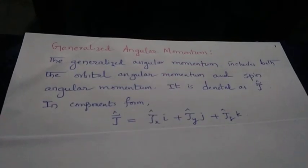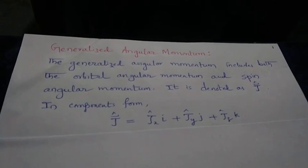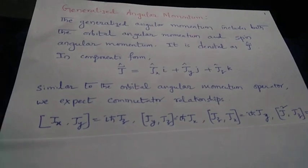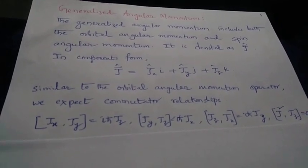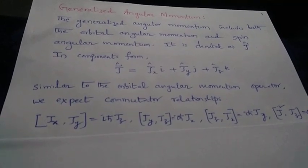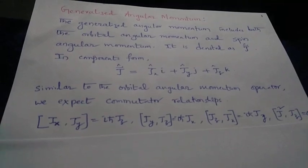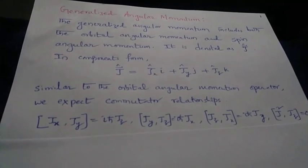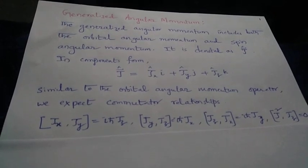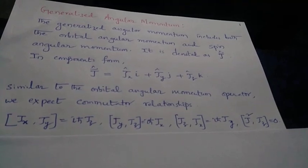In component form, J can be expressed as Jx i-hat plus Jy j-hat plus Jz k-hat. We take the commutator of Jx with Jy as i*h-bar times Jz, and similar expressions hold for the other combinations Jy,Jz and Jz,Jx, just like in the orbital angular momentum case. We also have the commutator of J² and Jz equal to zero.